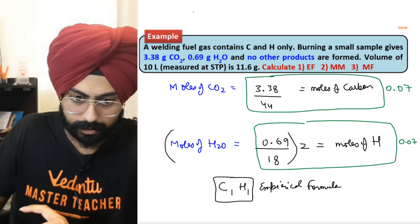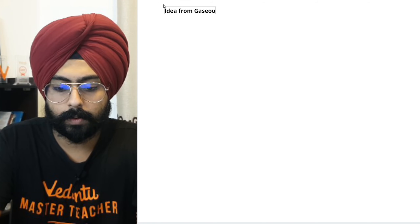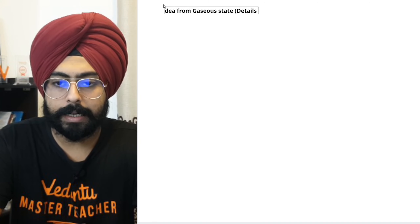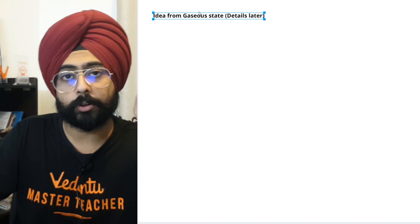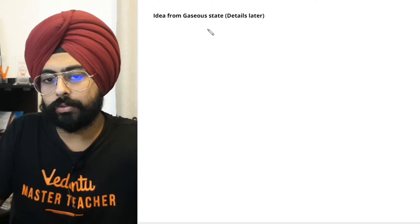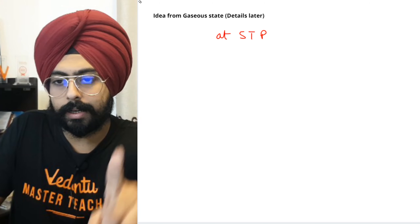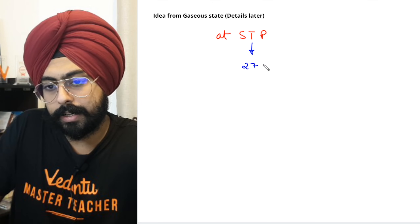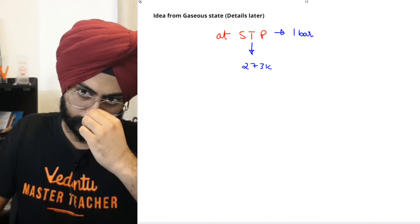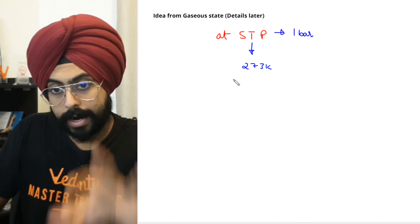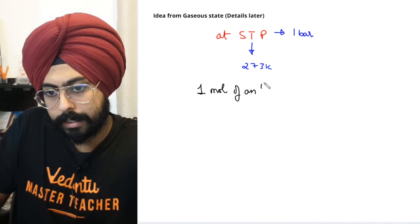The simplest whole number ratio for moles of carbon and hydrogen is C1H1. This is the empirical formula. Now comes how to calculate the molecular mass and molecular formula — this involves an idea from the gaseous state chapter.